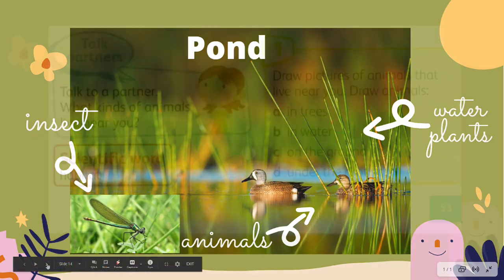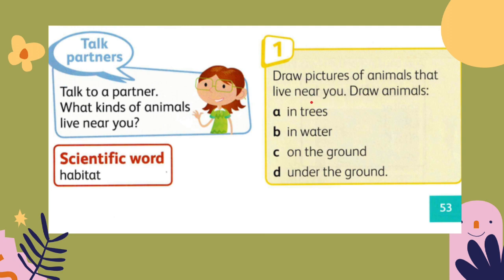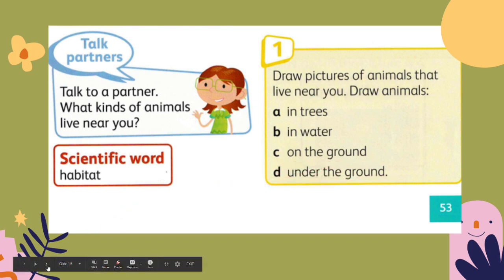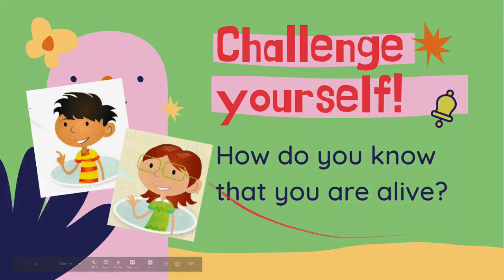Now talk to a partner about what kinds of animals live near you. Try to draw pictures of animals that live near you — you can draw animals that live in trees, in water, on the ground, or even under the ground. Now challenge yourself: How do you know that you are alive? Good job, future scientist! Till next time, thank you!